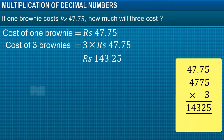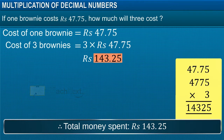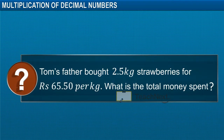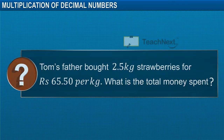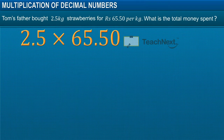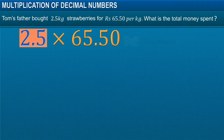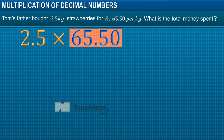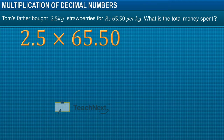Therefore, the total money spent for three brownies is 143 rupees and 25 paisae. Tom's father bought 2.5 kg strawberries for 65 rupees and 50 paisae per kg. What is the total money spent? To find the total money spent to buy the strawberries, we have to multiply the quantity of strawberries, which is 2.5 kg, with the price per kg, which is 65 rupees and 50 paisae.